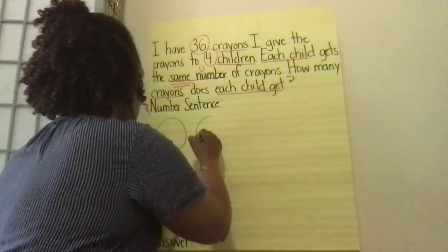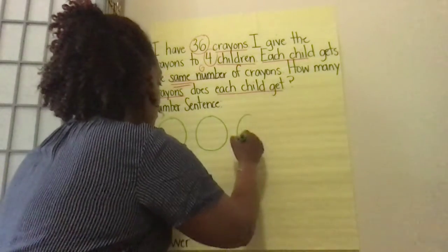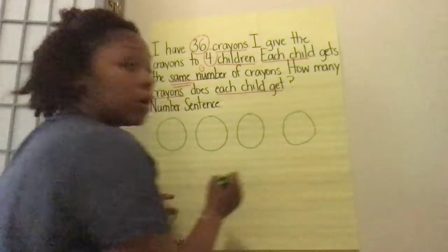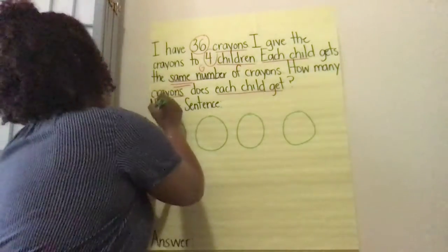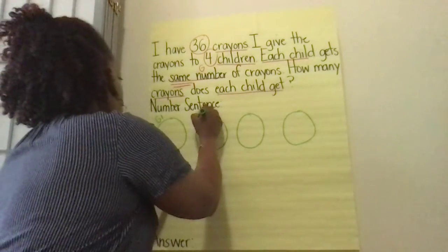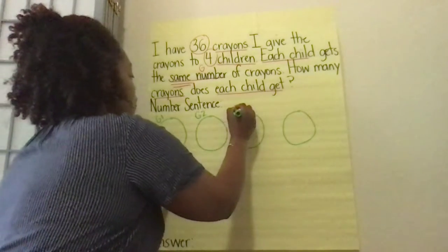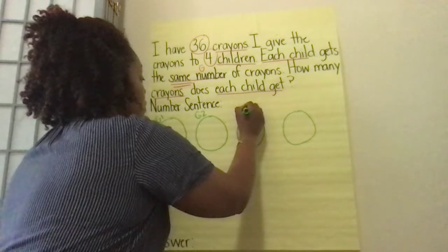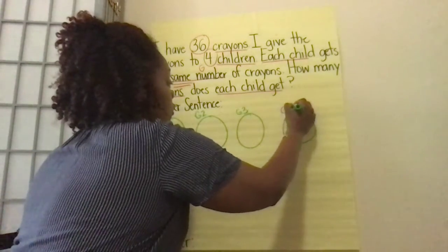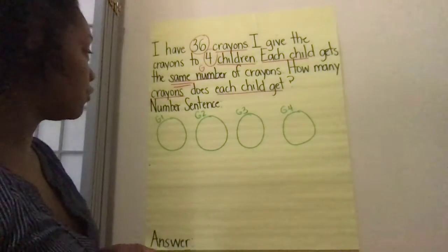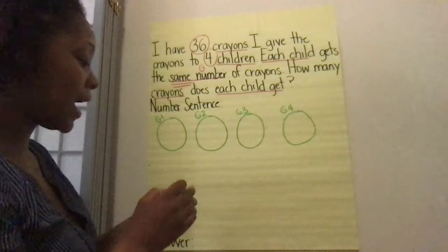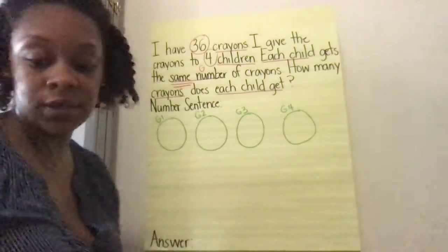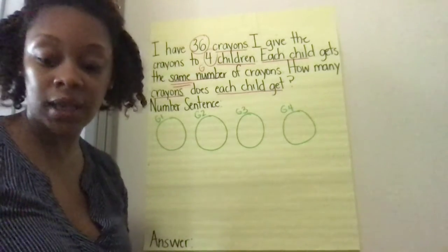Let me draw my four groups: one, two, three, and four. So this is group one for child one, group two for child two, group three for child three, and group four for child four. And I have to give out all 36 crayons so that each child gets the same.